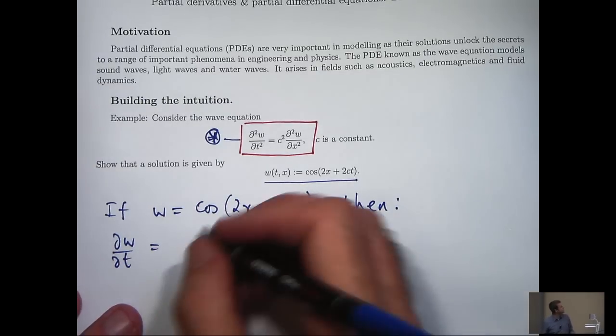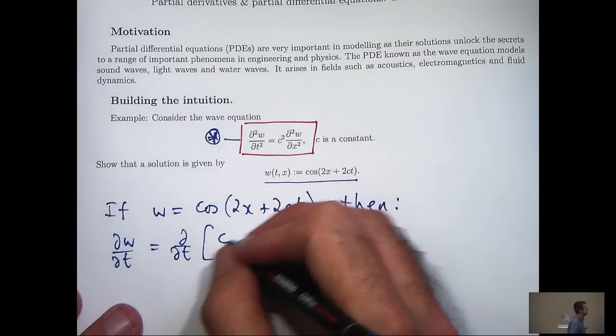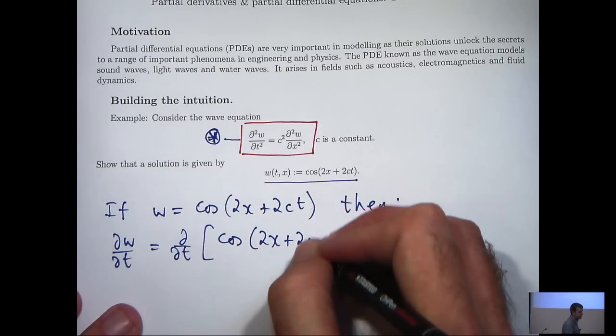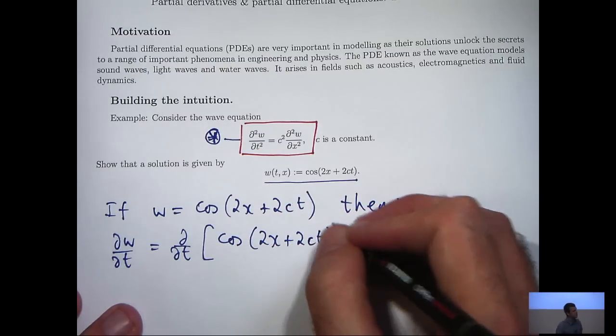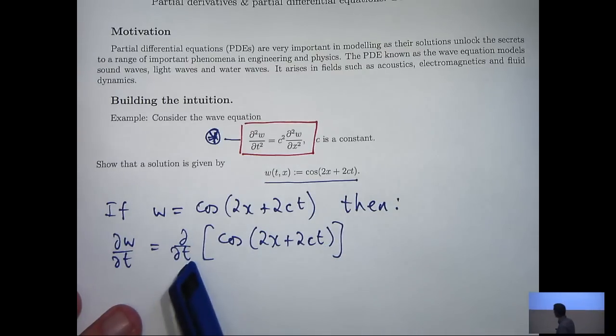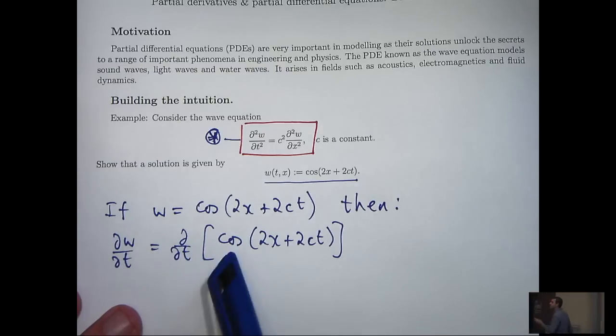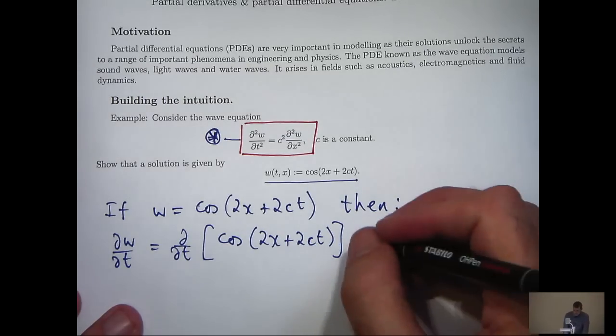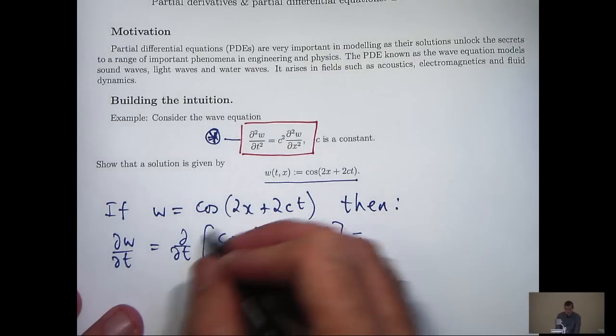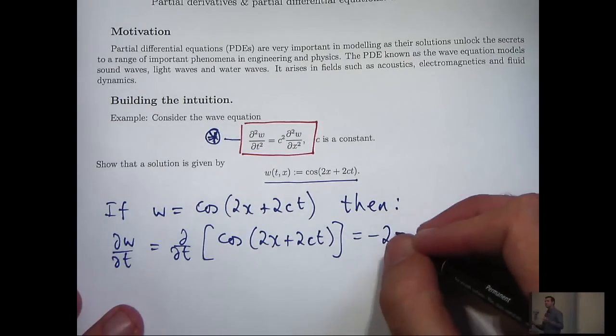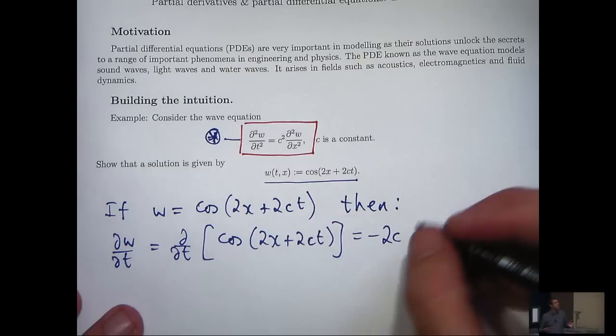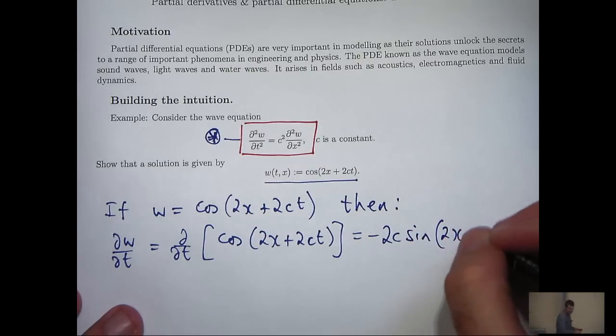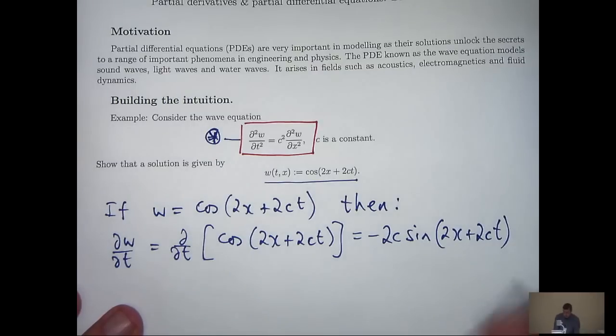So ∂w/∂t is just d/dt of this function here. When we take partial derivatives, we differentiate with respect to t, holding all the other variables fixed. So imagine x is fixed, c is a constant anyway, and we differentiate normally with respect to t. So that 2c will come to the front, and the cos will go to negative sine.